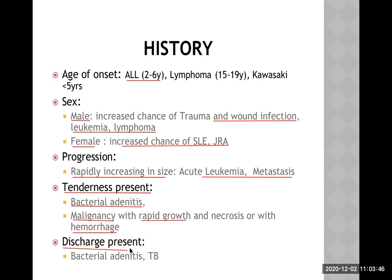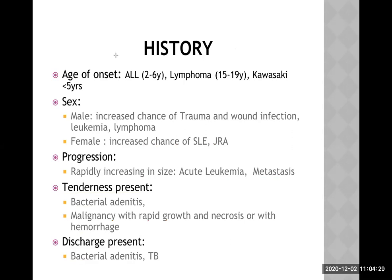Ask about any discharge from the lymph node area. In tuberculosis lymphadenitis, a sinus forms and a cold abscess discharge is seen. In bacterial adenitis, there is abscess formation that can rupture with a pus discharge. In tuberculosis we use the term 'cold abscess,' while in other bacterial conditions we call it pus with different characteristics.